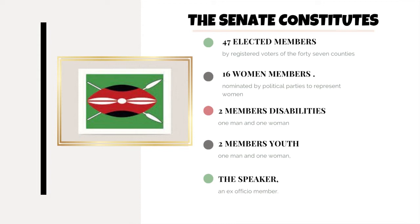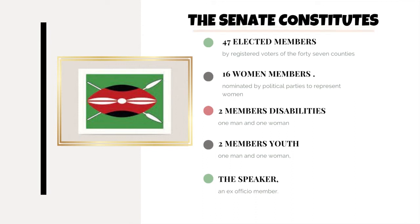So the 47 senators are elected, and the party that has the majority will then nominate 16 women members, two members representing people with disabilities — one man and one woman — and two members representing the youth — one man and one woman. Lastly, the 47 elected members will vote for a speaker. The speaker should be a non-elected member, so they are elected by the Senate members. It follows that the majority party will decide who becomes speaker.